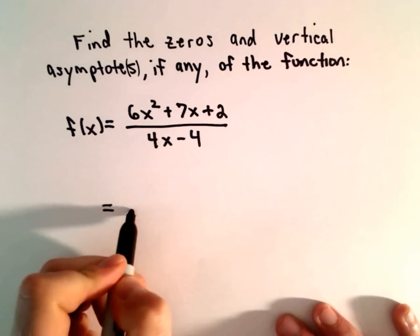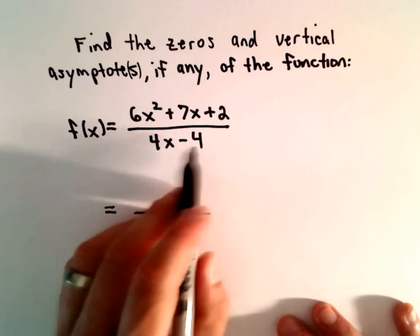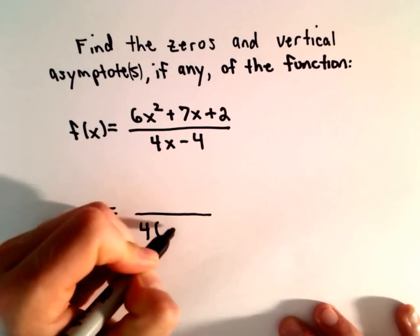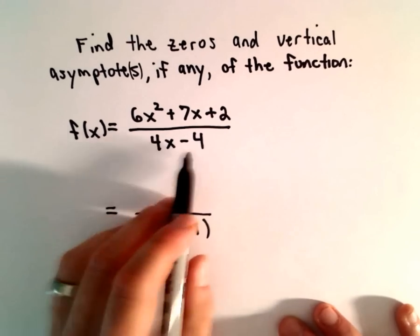The denominator looks easier to me. We have a 4 in common, so we can factor out the 4, we would have x - 1 left over. If you distribute, we'll get 4x - 4.